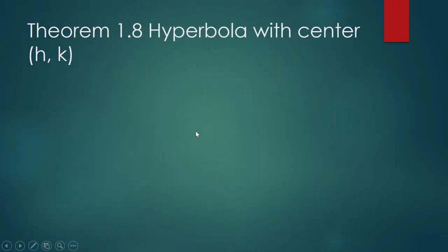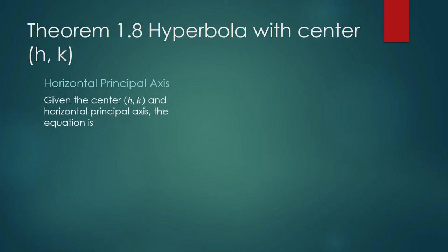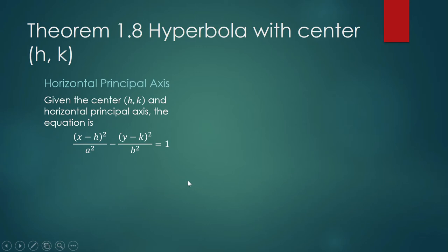Theorem 1.8: hyperbola with center HK. We shall lay down our standard equation for a hyperbola with center HK. We have two sets of equations. One is when the principal axis or the transverse axis is horizontal. Our center is HK, and the form is: X minus H squared over A squared minus Y minus K squared over B squared equals 1. The coordinates of our center are HK. C is always greater than A, and C squared equals A squared plus B squared.